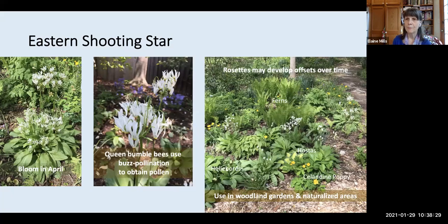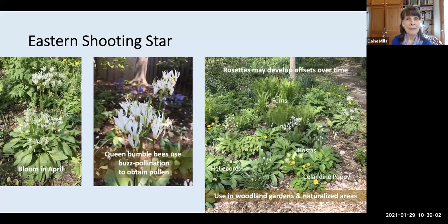I wanted to mention the celandine poppy — it is native to Virginia, but native plant sellers have pointed out it is only native in the mountainous regions of Virginia. It can become quite aggressive. While babysitting some potted plants for a plant sale, I had them cropping up in other parts of my garden very quickly, so I've decided not to use that particular plant. This is not to be confused with the invasive lesser celandine, Ficaria verna. The celandine poppy — the native one from mountainous areas — is Stylophorum diphyllum.